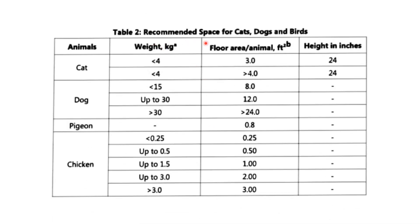This section shows the recommended space for cats, dogs, and birds. For cats, dogs, pigeons, and chickens, the floor area and cage height in inches are specified based on weight in kilograms per square unit, as defined by the CPCA committee.